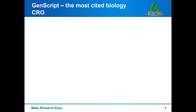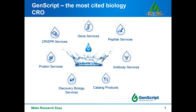Some of you may know GenScript; some may not. Our company was founded in 2002 with the mission to accelerate biological research by offering high-quality services and bio-reagents, including custom gene synthesis, peptides, antibodies, proteins, as well as CRISPR and other reagents. We also offer discovery biology services to support drug development and catalog products. We are one of the most frequently cited companies in the world, with over 10,000 publications citing our services. Our mission is to make research easy, accelerating work in both academic and industry settings.